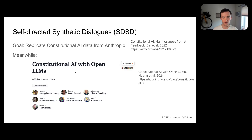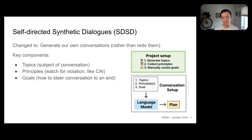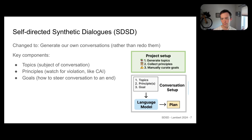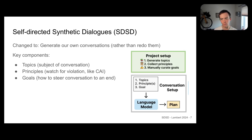We ended up changing how we source the data to make revisions in the process. We changed it to actually generate our own conversations based on a few things we can both automatically and manually curate. The first is topics — anything from Taylor Swift to food groups to cooking. We also have principles, which we source from the constitutional AI paper and things like Claude's constitution. And then goals, which are the planning principles for how the language model will talk to itself.